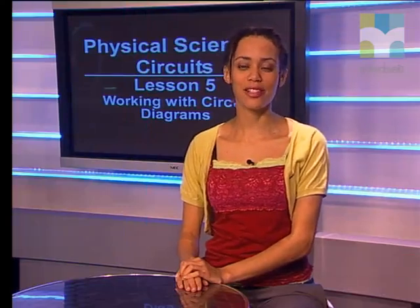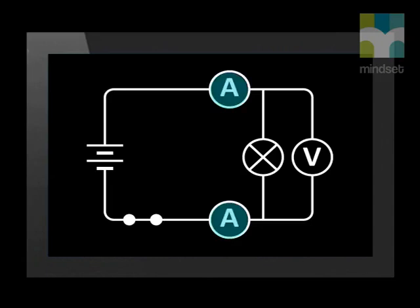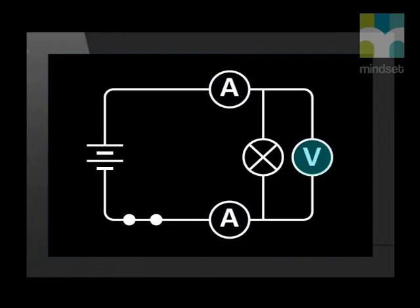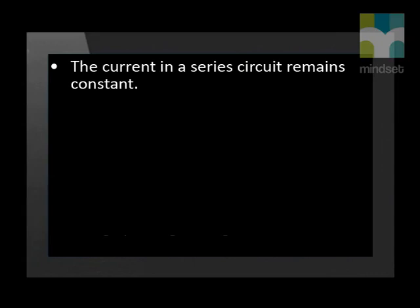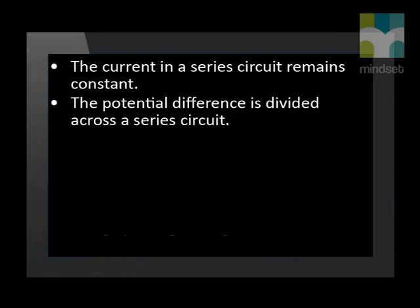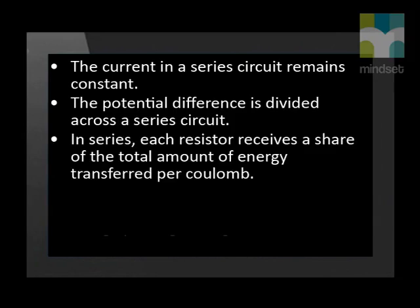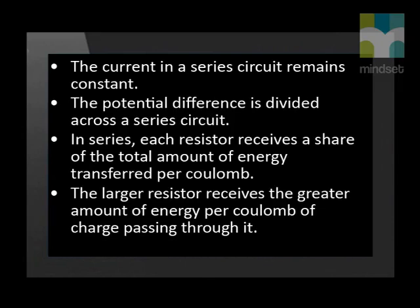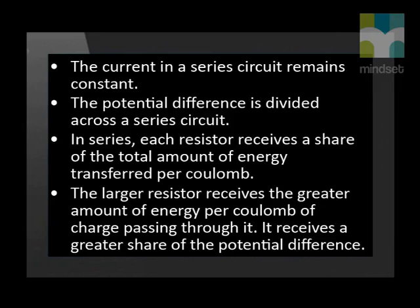Let us summarize what we have learned in this lesson. We now know how to draw a circuit with both ammeters and voltmeters connected correctly. The ammeter is drawn to show it is connected in series, while the voltmeters are drawn to show they are connected in parallel. We have also learned that the current in a series circuit remains constant, while the potential difference is divided across a series circuit — each resistor receives a share of the total energy transferred per coulomb, and the larger resistor receives the greater amount of energy per coulomb, and therefore a greater share of the potential difference.